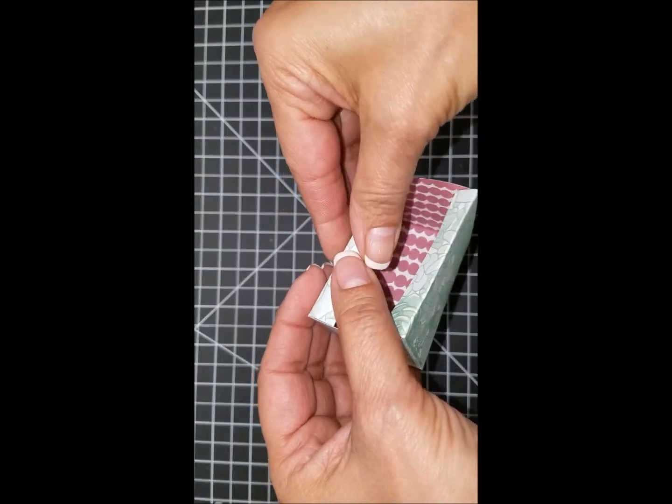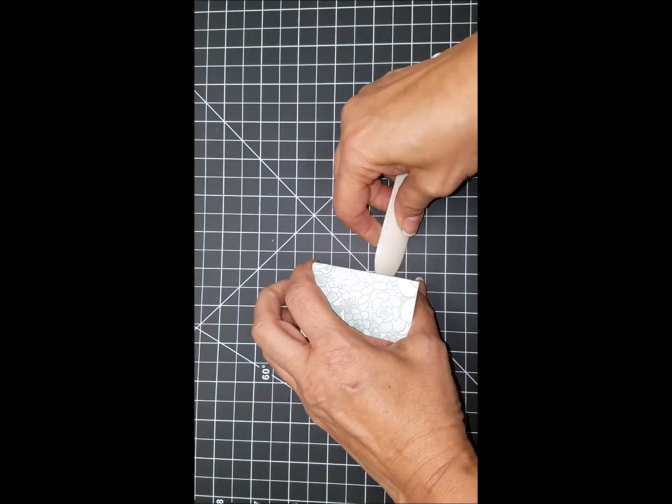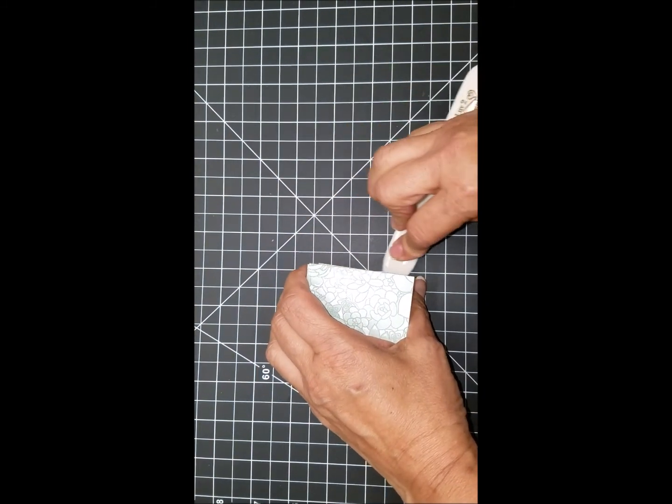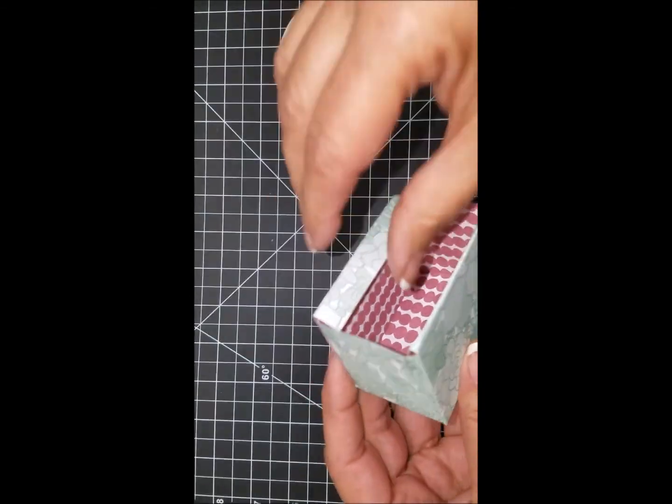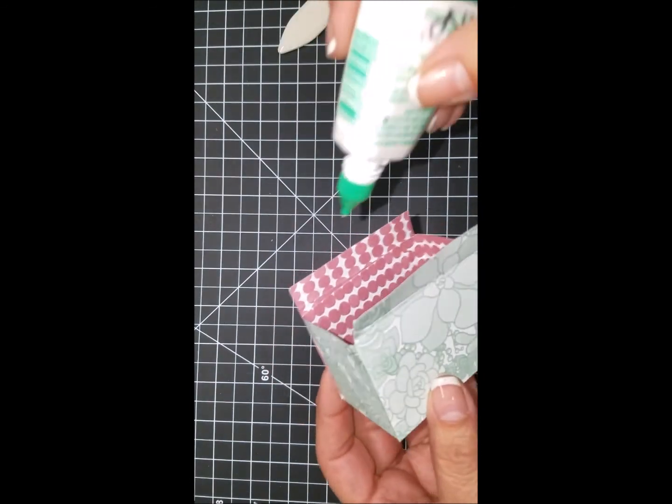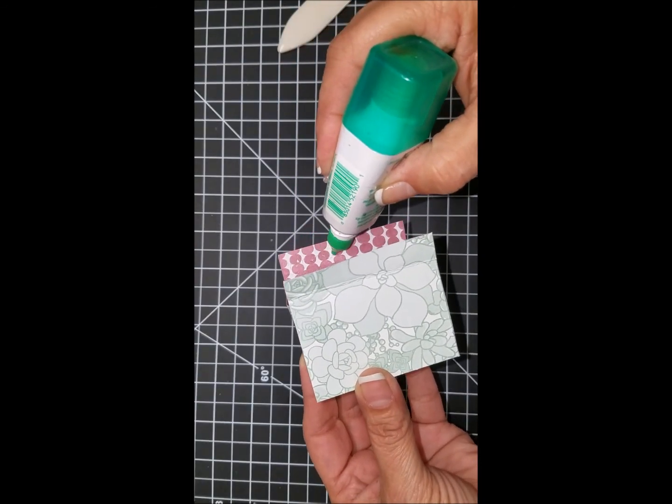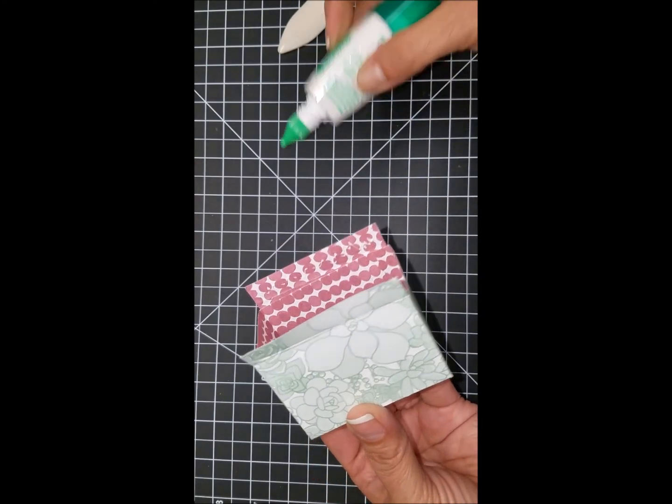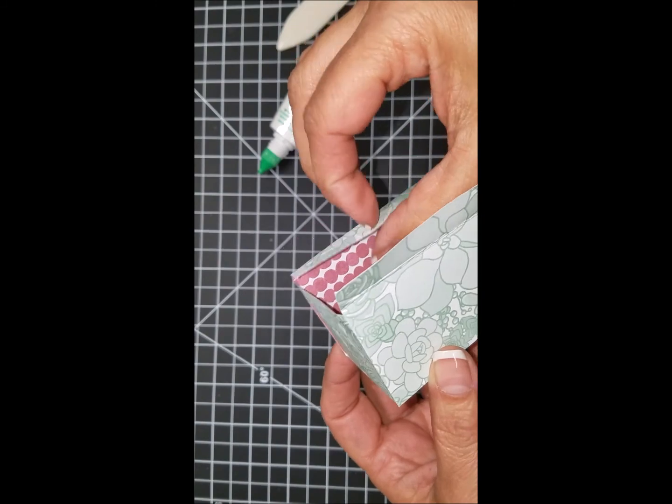Now we're going to take some Tombow multi-purpose glue and we're going to put a scant of glue on the ends. It really doesn't take a whole lot, this glue is absolutely wonderful, dries quickly. All you need to do is fold over, press and hold for maybe three or four seconds.